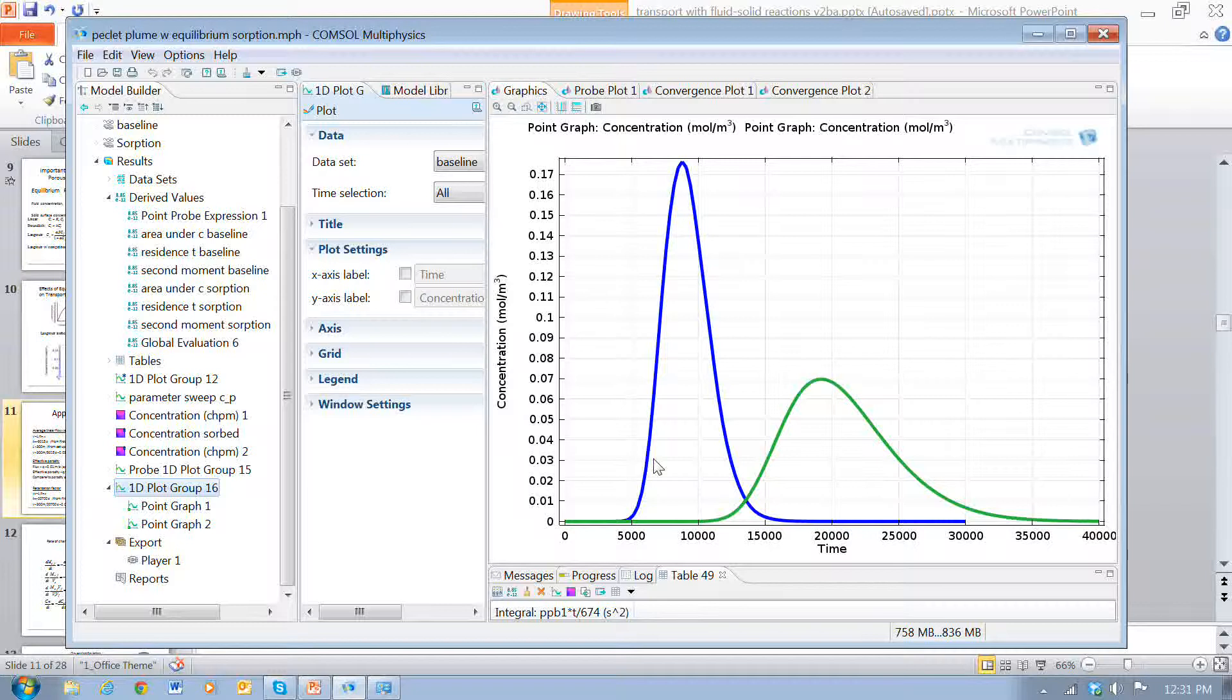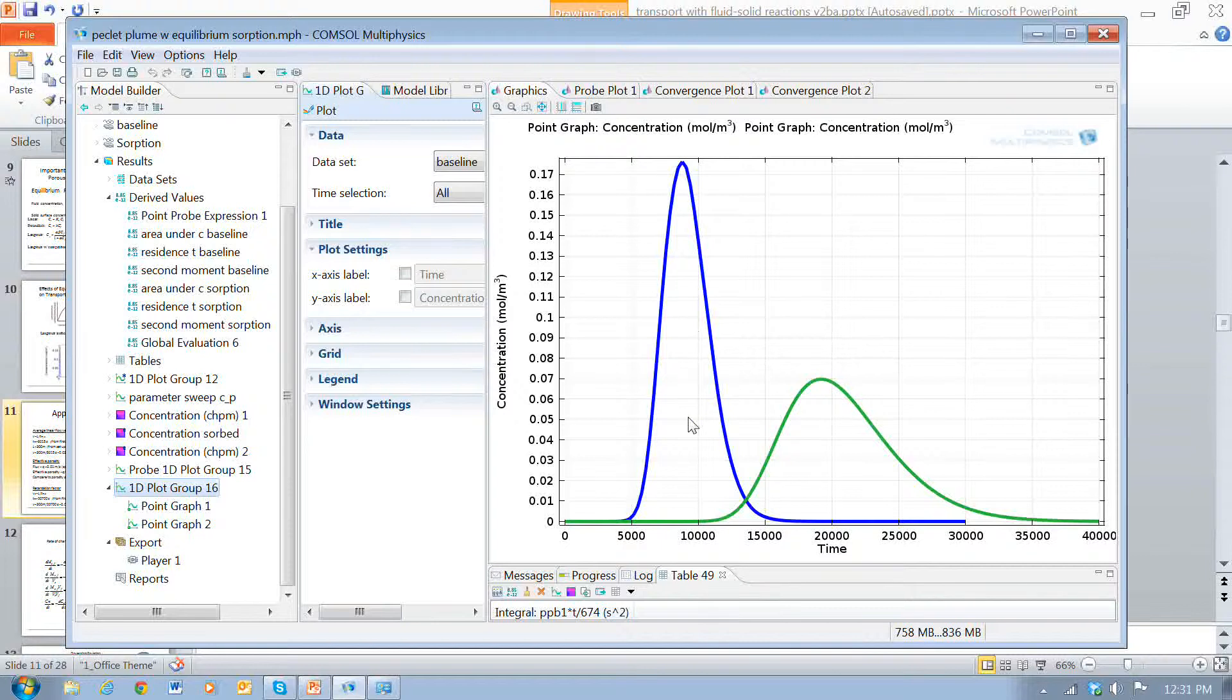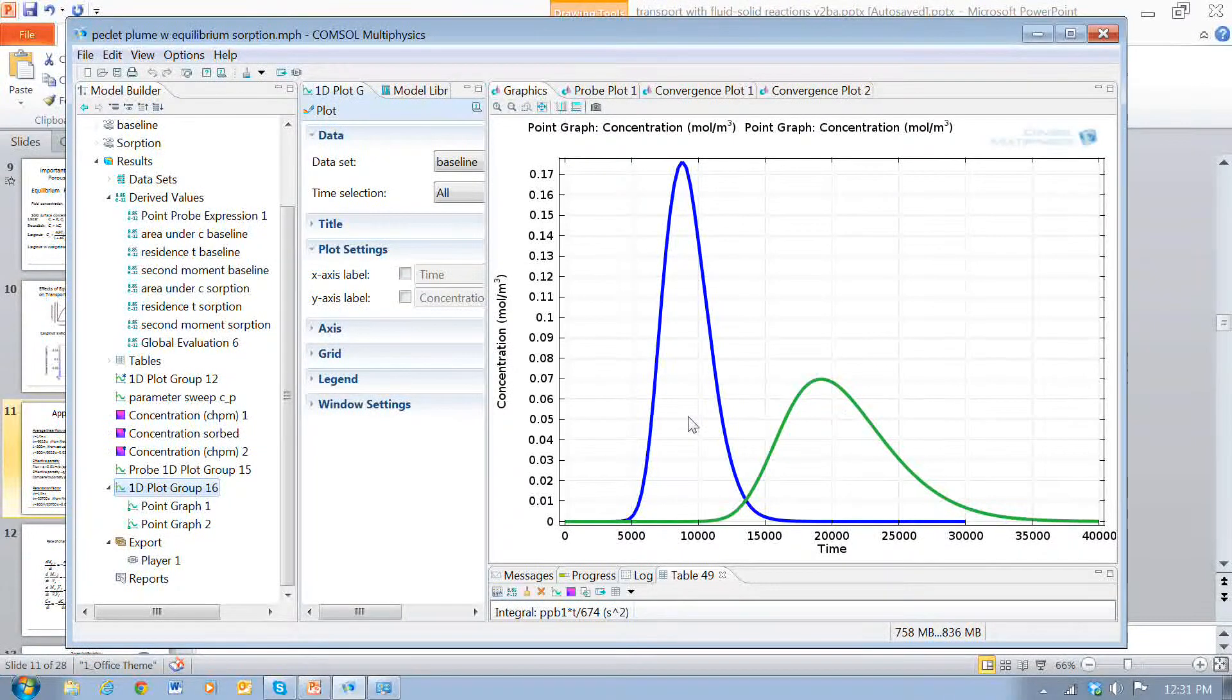A compound that does undergo sorption has a breakthrough curve or a concentration as a function of time that looked like this. The peak is diminished and the concentration is spread out in time. It also arrives at a later time than the arrival of the peak from the conservative tracer.